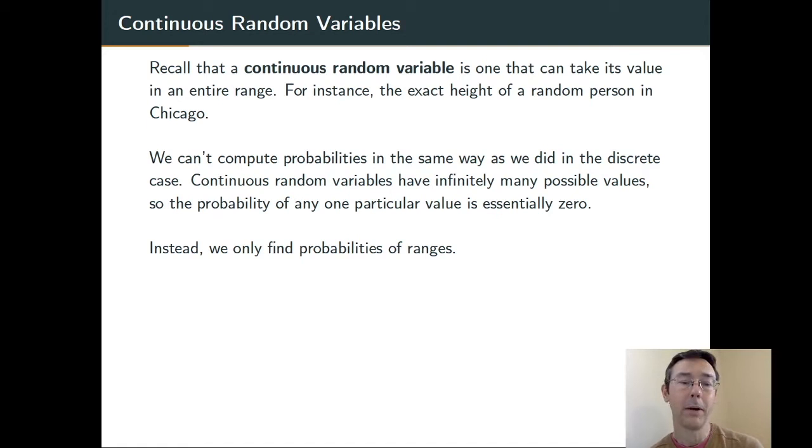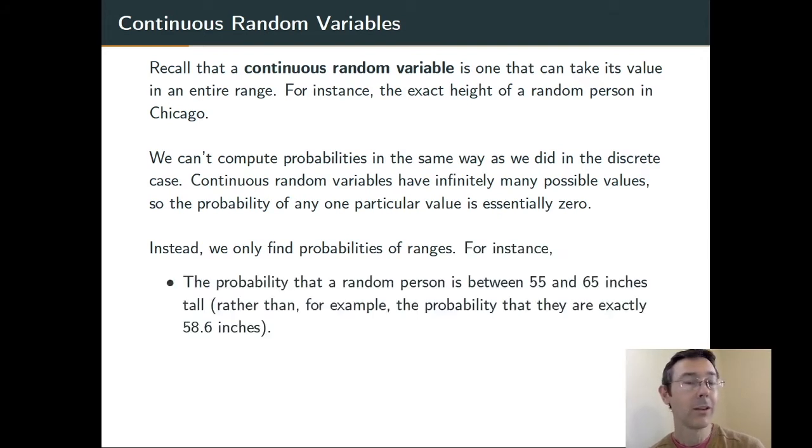We get around that by only talking about probabilities that the random variable shows up in specific ranges of values. For instance, when we're selecting that person at random, instead of asking the probability that they are exactly 58.6 inches tall, a probability that's going to be zero, we instead ask something like what's the probability that they are between 55 and 65 inches tall, a probability that's probably not going to be zero.